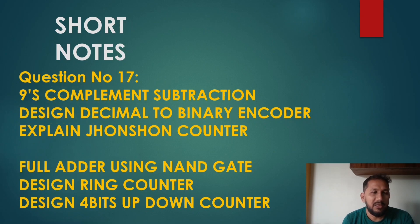Next question is question number 17. 9's complement subtraction. Design decimal to binary encoder. Explain Johnson counter. Full adder using NAND gate. Design ring counter. Design 4-bit up-down counter.